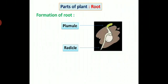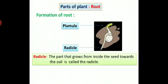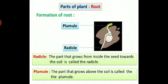Formation of Root. You can observe a sprouted seed in this diagram. There are two parts to this sprouted seed, plumule and radical. Radical is the part that grows from inside the seed towards the soil. Plumule is the part that grows above the soil.